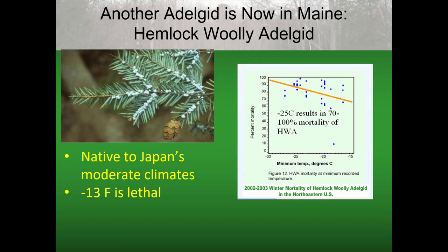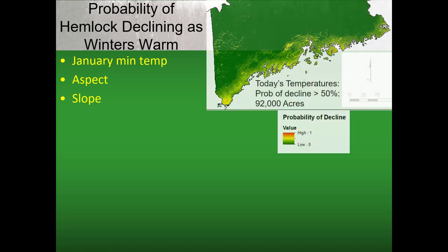The same is true for a new insect coming into the state: the hemlock woolly adelgid, another non-native insect native to Japan. Fortunately, it's from the moderate climates of Japan, and the insect population on hemlock is killed off by minus 13 degrees Fahrenheit. That shows the mortality that can occur with this insect at cold temperatures. However, we're expecting temperatures to warm, and we've developed some models to predict what might happen to the health of hemlock as temperatures warm up.